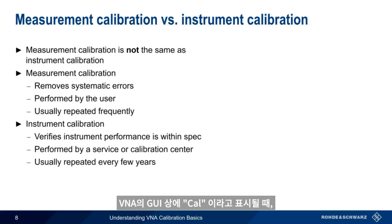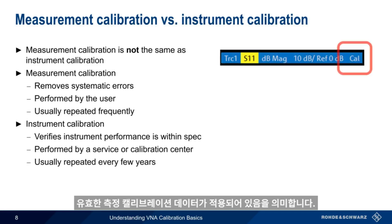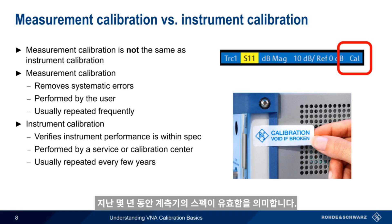A VNA has a valid measurement calibration when it displays CAL somewhere on the GUI. A VNA has a valid instrument calibration when its calibration stickers are intact, and the instrument has been in for a calibration sometime during the last few years.